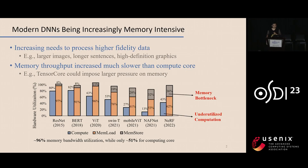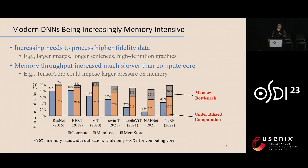For the background, a lot of new model architectures have been proposed in recent years and a number of them are becoming increasingly memory intensive. In this figure, we provide some metrics for ONNX runtime on several inference tasks, and we can observe a clear gap between the underutilized computation cores and the saturated memory bandwidth. This indicates that a lot of models are bottlenecked by memory access. Moreover, new GPUs with faster tensor cores can further speed up computation, which will also enlarge this gap.